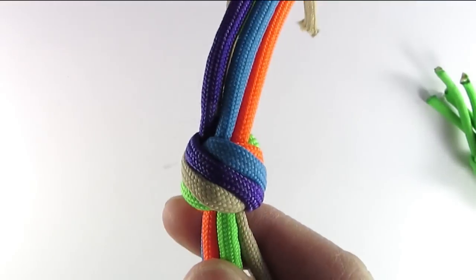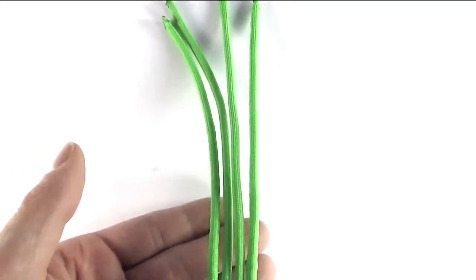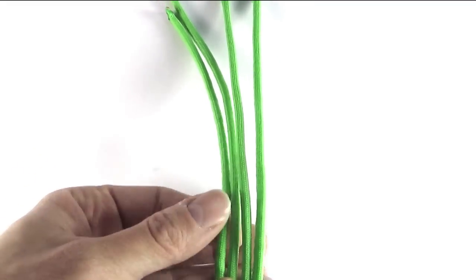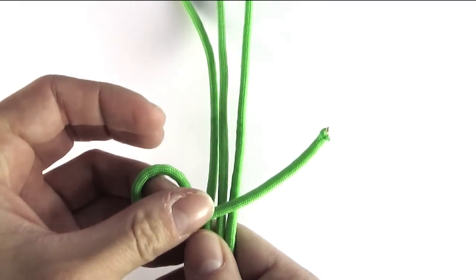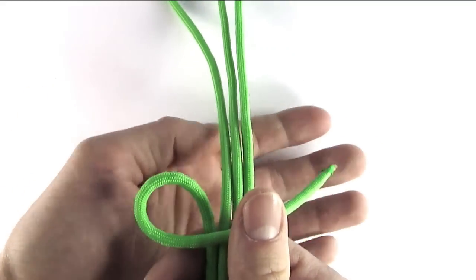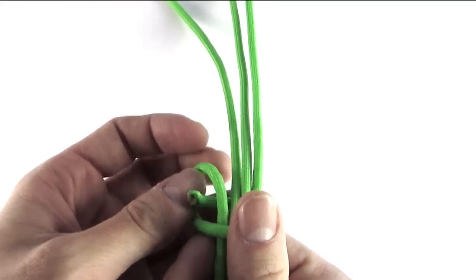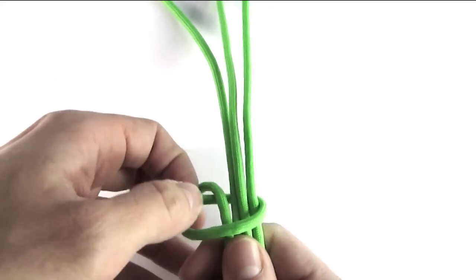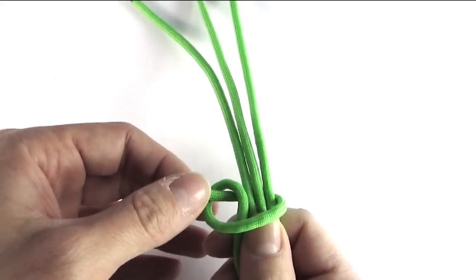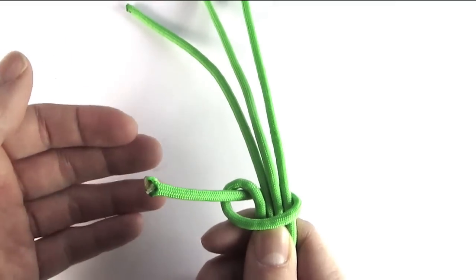To tie this knot we're going to take any number of cords, line them one next to the other, and then wrap our first cord around all the other cords and then through the loop it made back into itself, you could say.